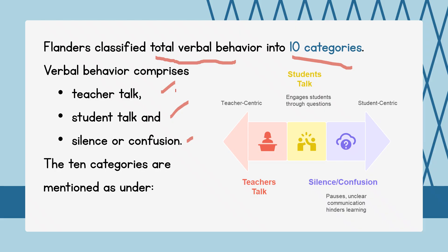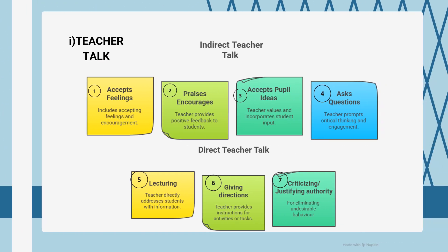In these 10 categories, the first 7 come under teacher talk. Within those 7, the first 4 — categories 1, 2, 3, and 4 — fall under indirect teacher talk, and categories 5, 6, and 7 come under direct teacher talk.